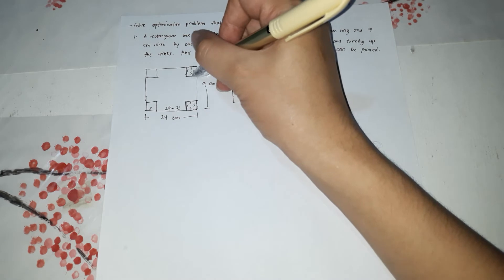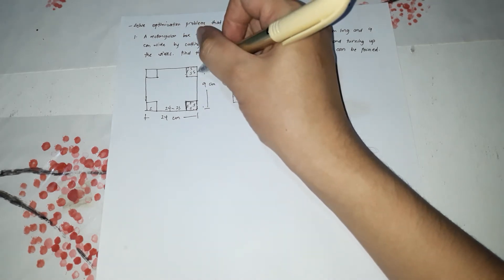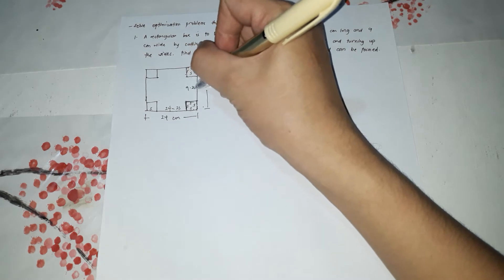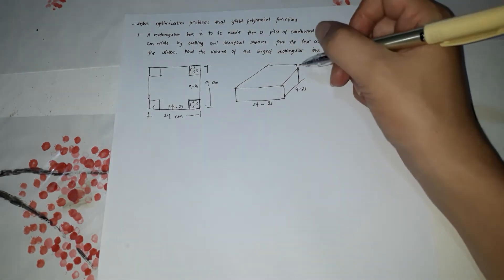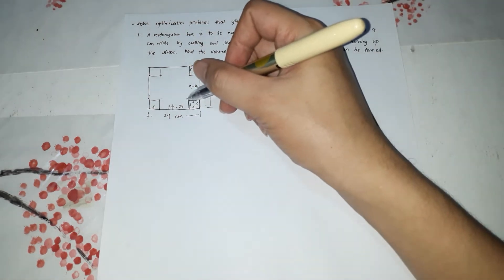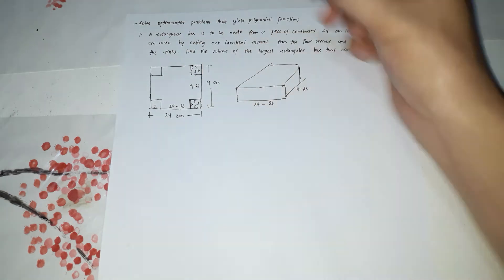And here it's 9. The 9, subtract an S. Subtract another S. So 9 minus 2S. So how tall is the box? So if you flip it, the height of the box is S. Very good.